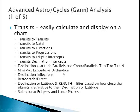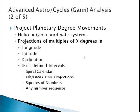You can also do retrograde direct. There's also a feature called declination or latitude strength, which is a filter based on how close the planets are relative to their declination or latitude. You can also plot solar/lunar eclipses and lunar phases.